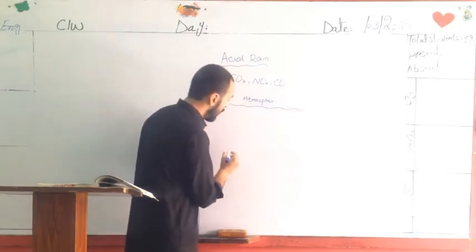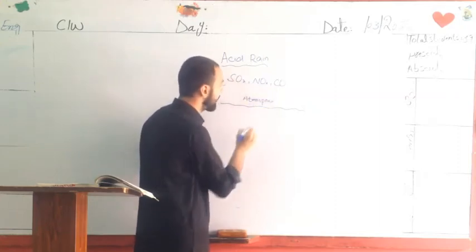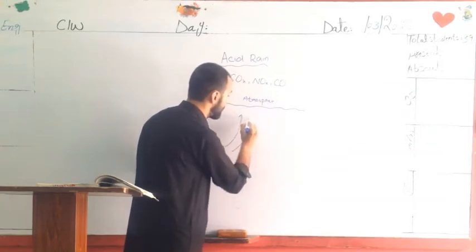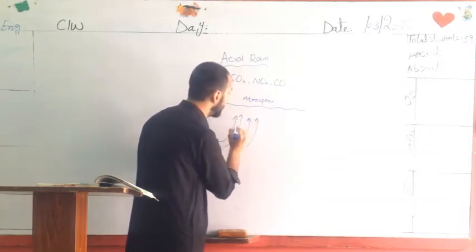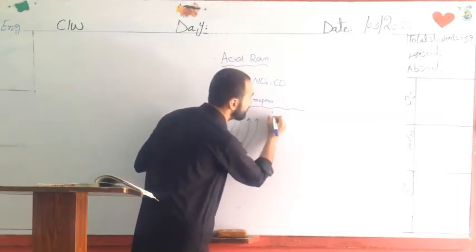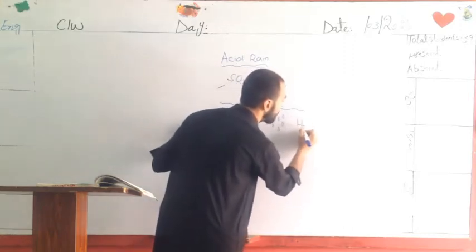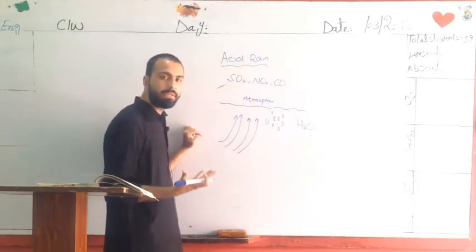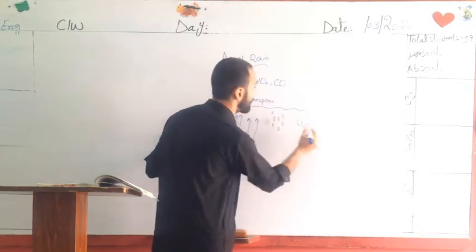So when these gases sulfur dioxide, nitrogen dioxide and carbon monoxide یہ جب atmosphere میں چلے جاتے ہیں تو جب وہاں پر پھر بارش برسی گی۔ اب بارش کیا ہے؟ پانی ہے، H2O ہے۔